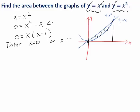So either x is zero or x minus one is zero. So x is zero or x is one. Those are the two values of x where these graphs cross each other.